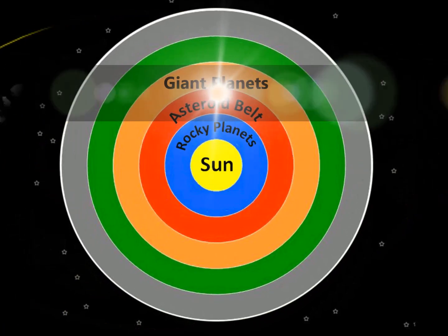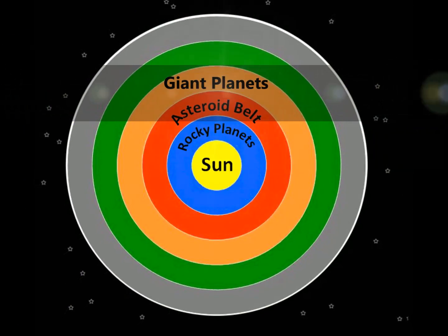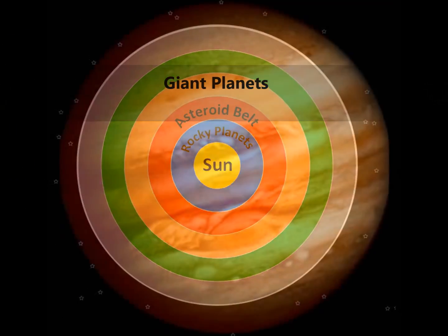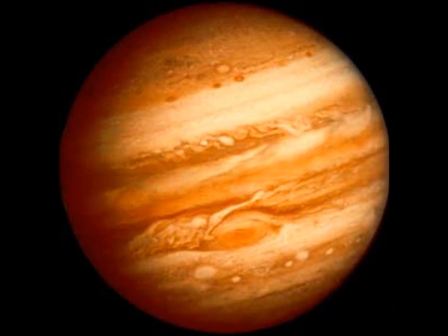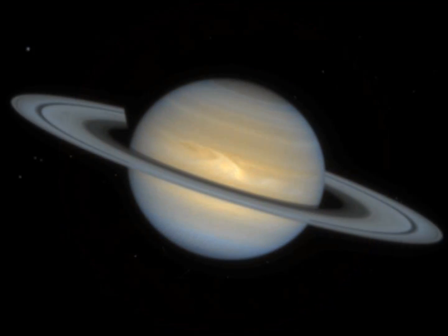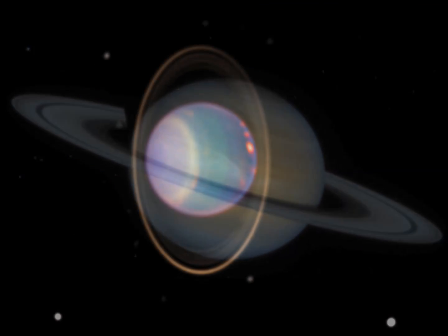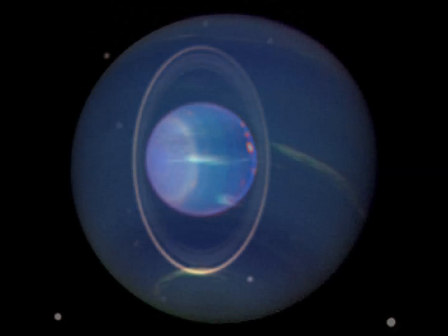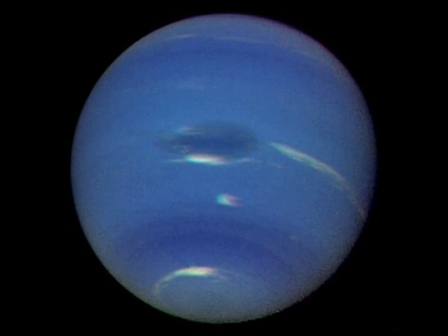The giant planets — Jupiter, Saturn, Uranus, and Neptune — follow mostly circular orbits and have deep gaseous atmospheres with many moons and rings.